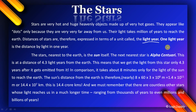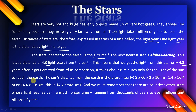One light year is the distance traveled by light in one year. The nearest star to Earth is the Sun, and after that is Alpha Centauri. If Alpha Centauri emits light on any given day, that light takes 4.3 years to reach Earth.